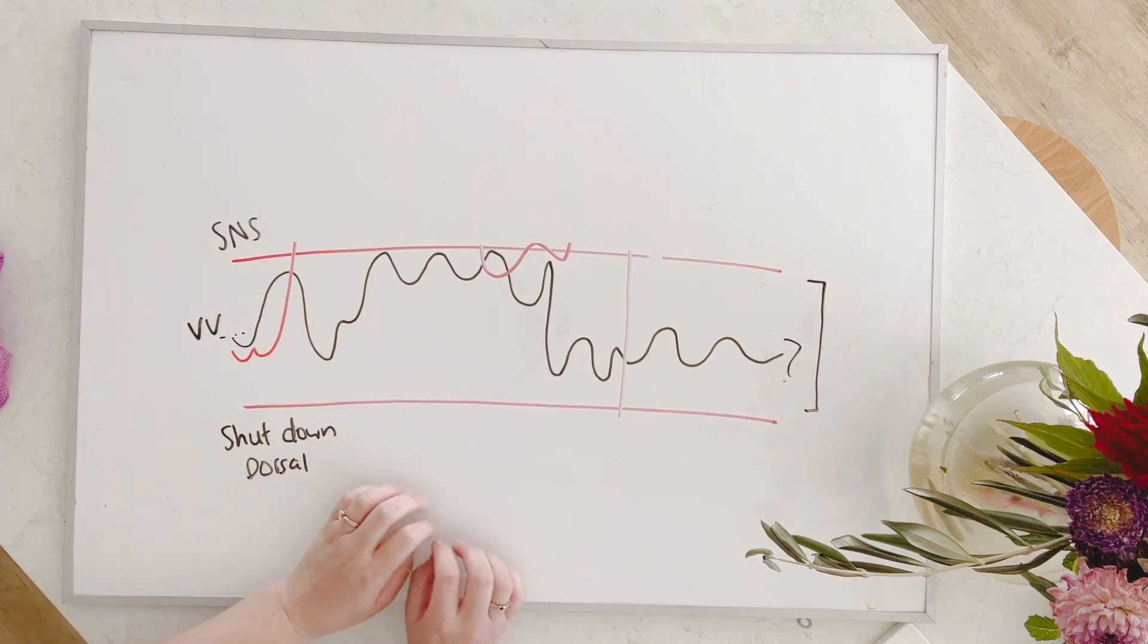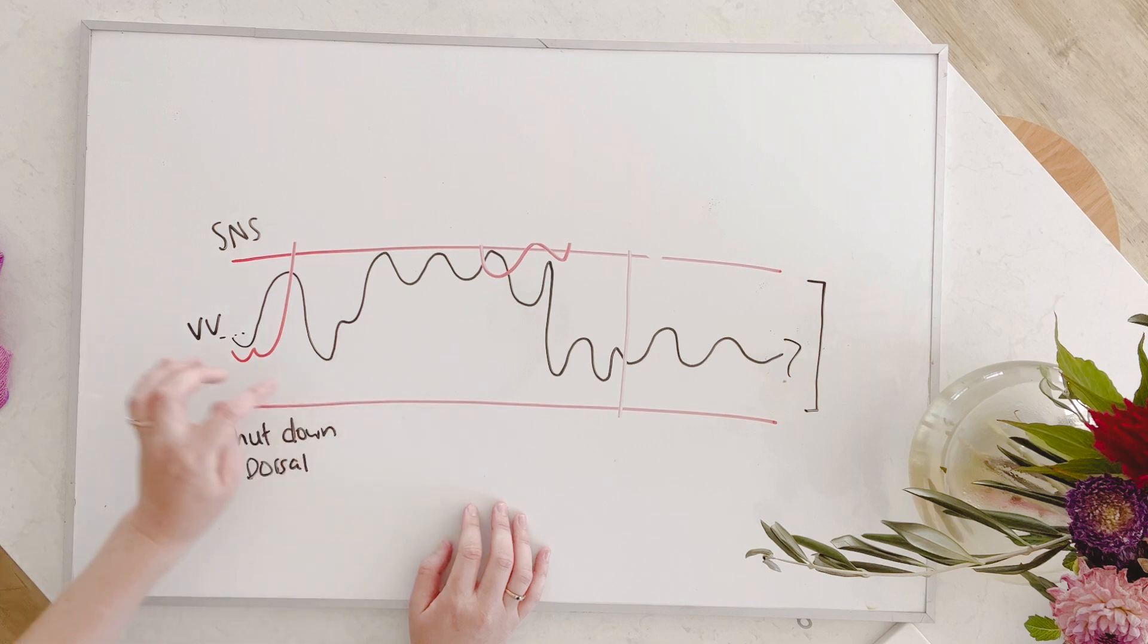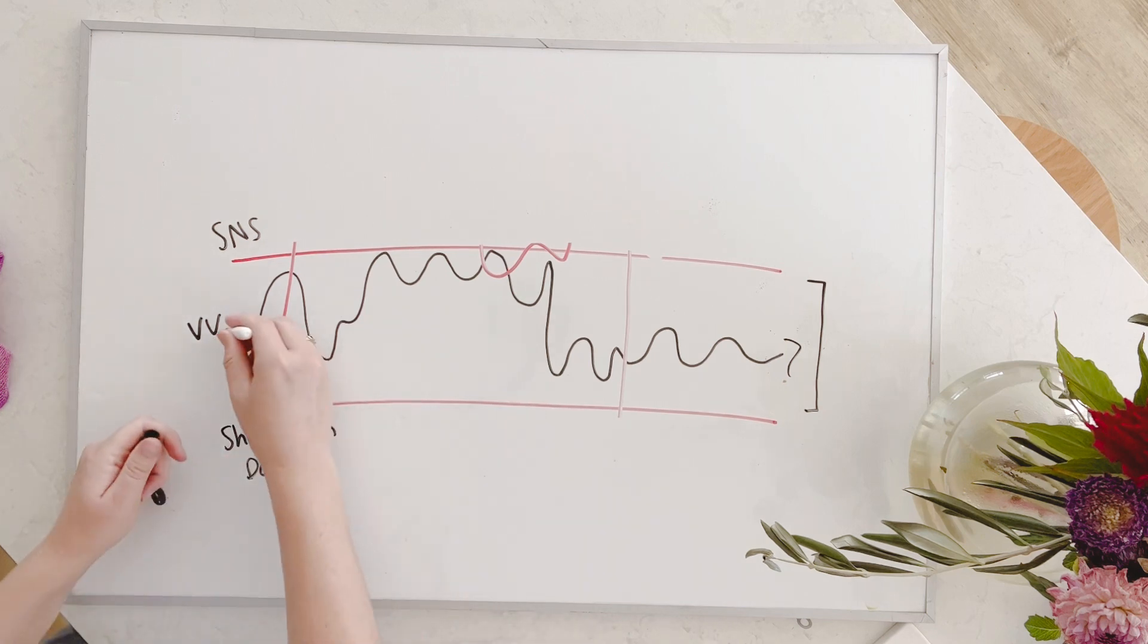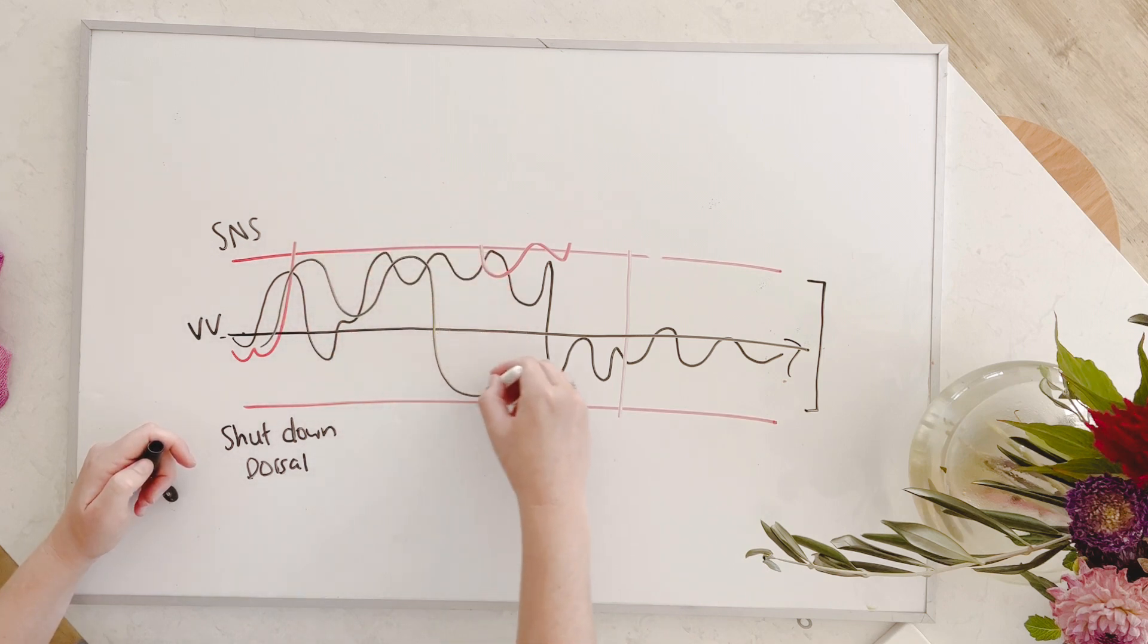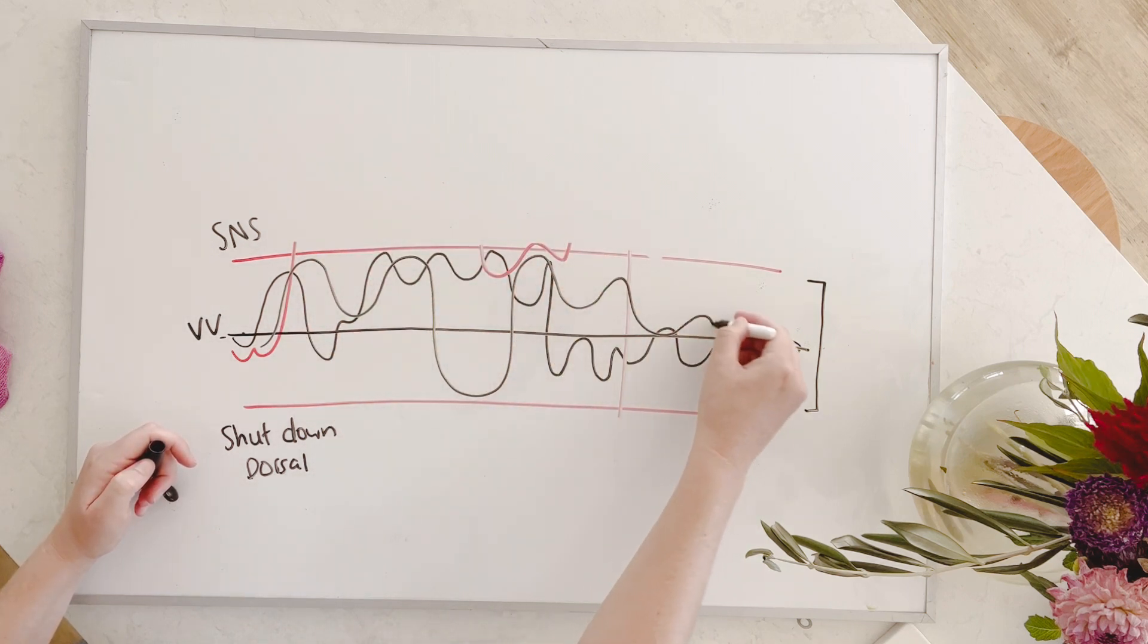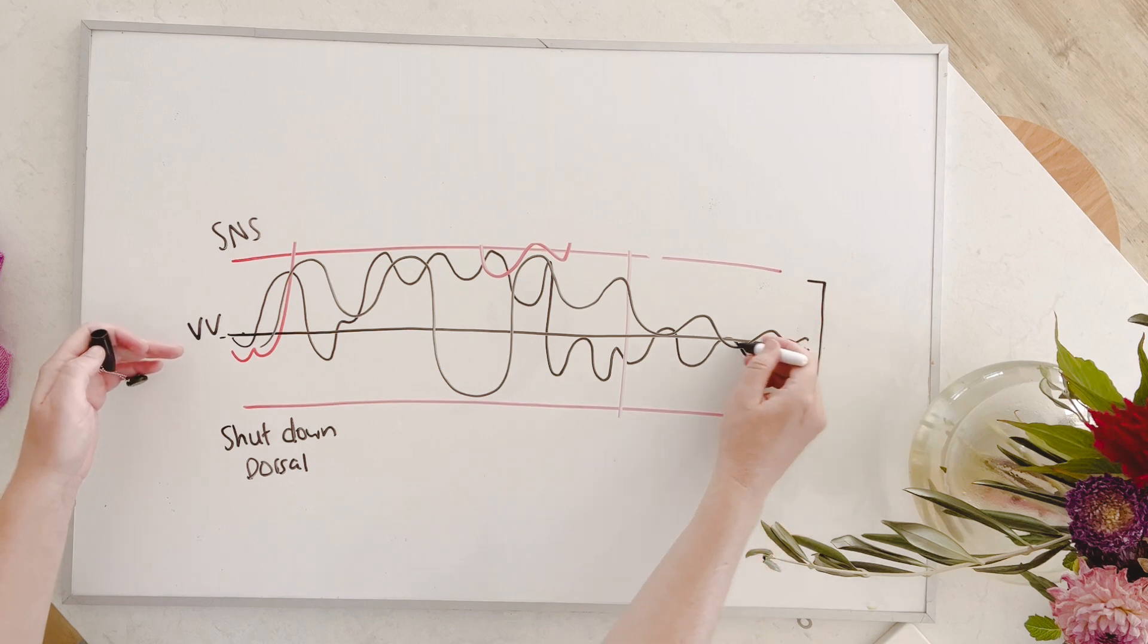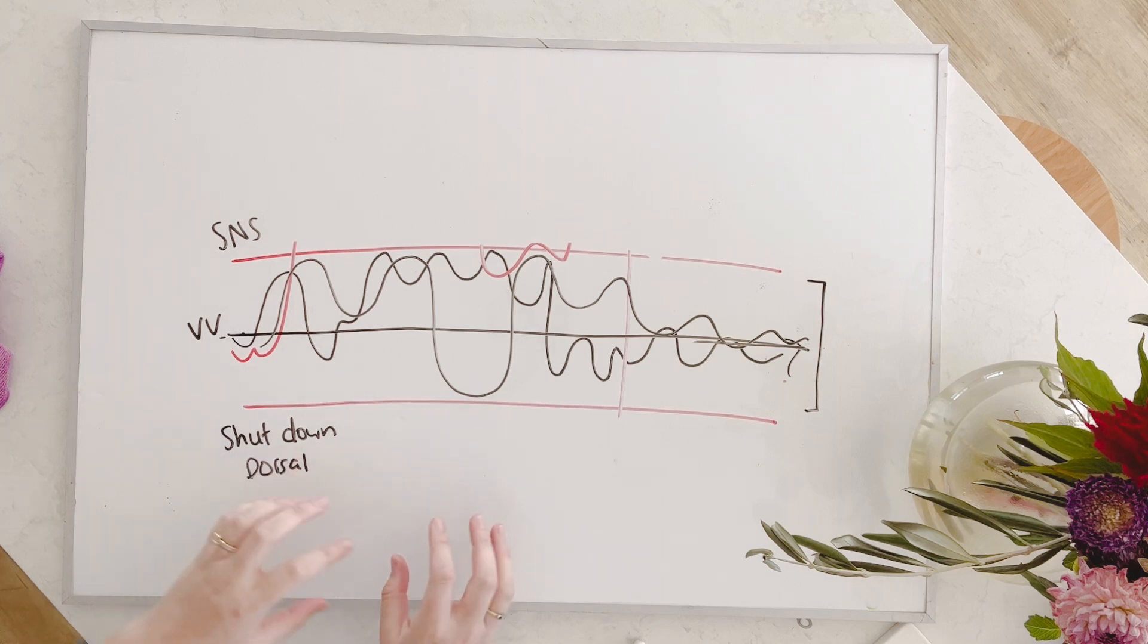That is what a true resilient nervous system looks like. Not one that cruises along completely calm all day but one that fluctuates within this level of tolerance and can bring itself back to the baseline when needed. So hopefully this has been a little bit helpful for you in understanding your own nervous system a little bit more and the motivation for working with it going forward.